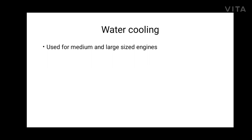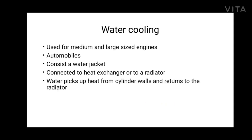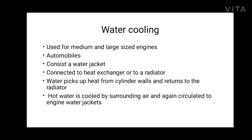The system consists of a water jacket enclosing the cylinder and cylinder head. The water jacket is connected to a heat exchanger or to a radiator in the case of an automobile. The water from the radiator flows to the water jacket where it picks up heat from the cylinder walls and returns to the radiator. The hot water reaching the radiator is cooled by transferring heat to the surrounding air, and the cooled water is again circulated to the engine water jackets.